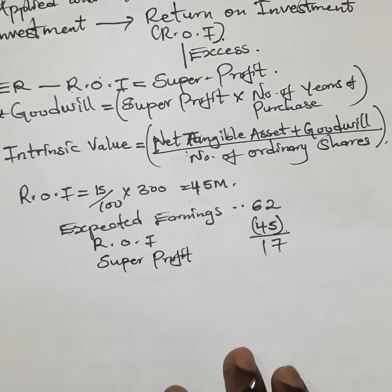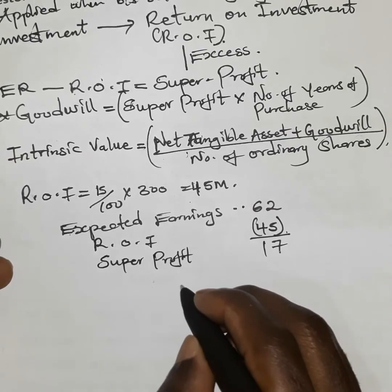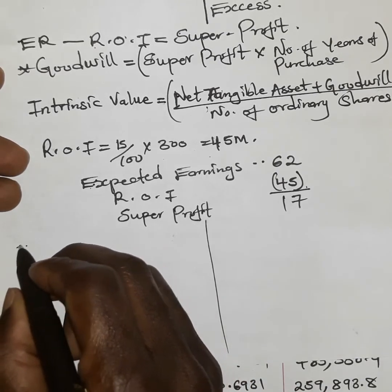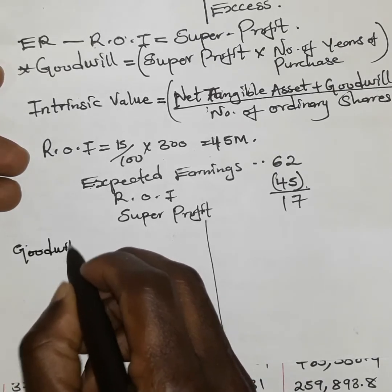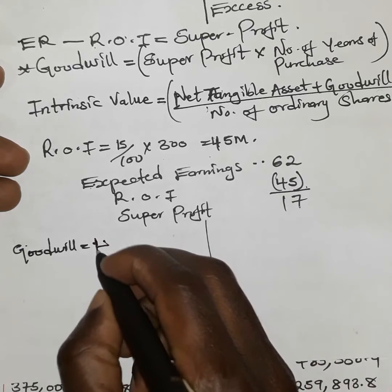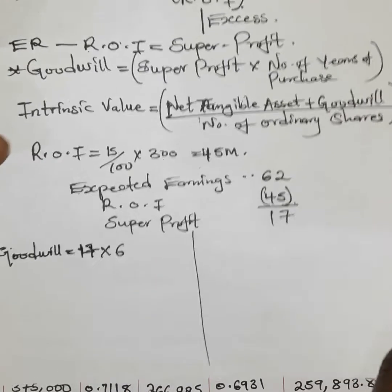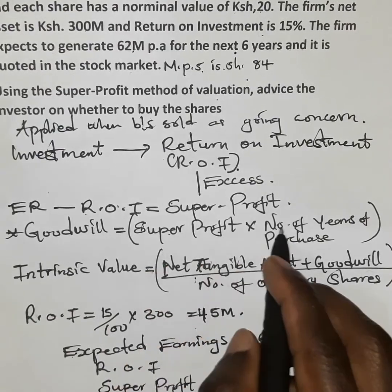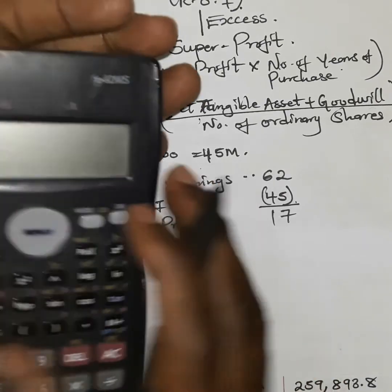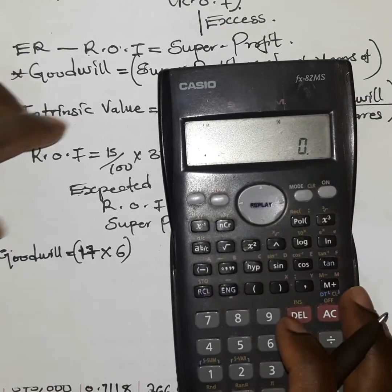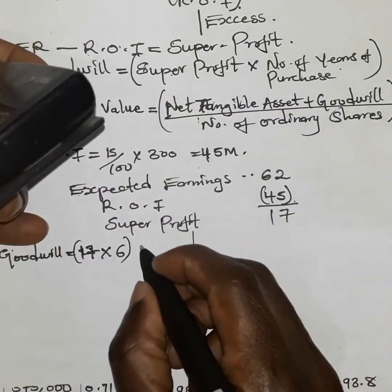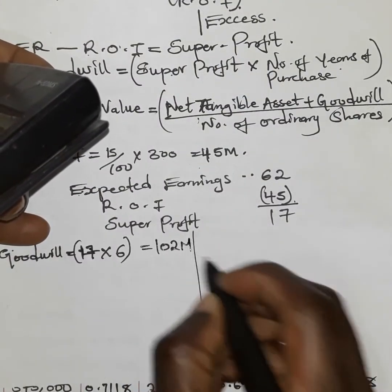Now we calculate goodwill: goodwill = super profit × number of years of purchase = 17 million × 6 = 102 million, because the investor is going to hold this investment for 6 years.